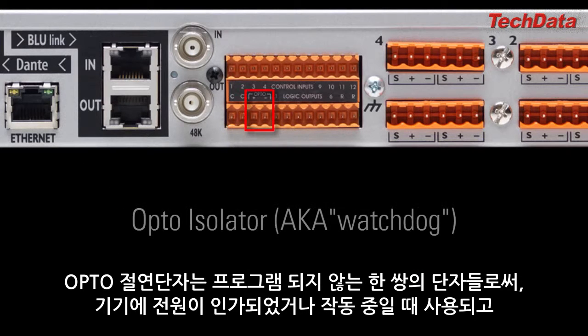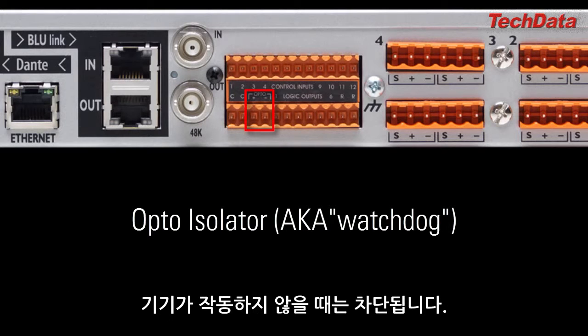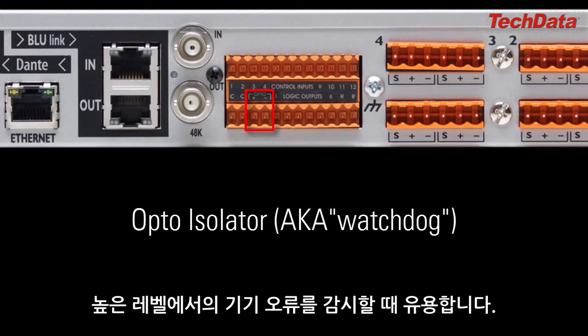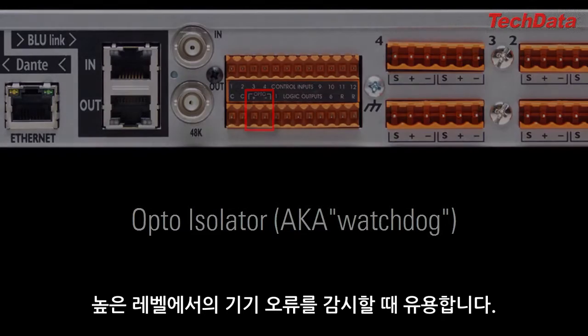The opto-isolator is a non-programmable pair of pins which conduct when the device is powered and functioning normally, otherwise it gets cut off. This is useful for high-level fault monitoring of the device.